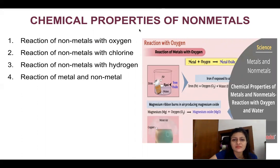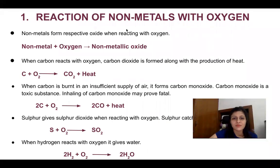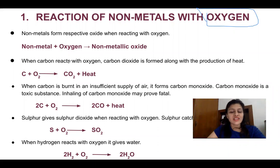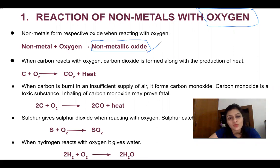Now, chemical properties. In chemical properties, we see reactions of non-metals with oxygen, chlorine, hydrogen, and reactions with metals — four types of reactions. When non-metals react with oxygen, they make non-metal oxides. Just like metals make oxides, non-metals also react with oxygen to make non-metal oxides. First, let's talk about carbon: when carbon burns in a sufficient supply of air, it produces carbon dioxide and heat. But when carbon burns in a limited supply of oxygen, it forms carbon monoxide.